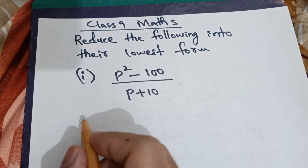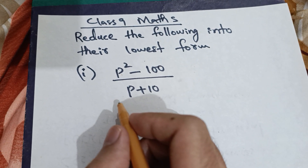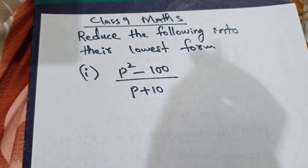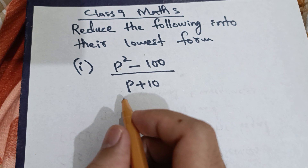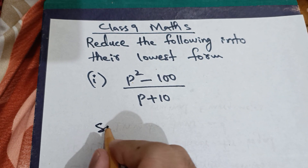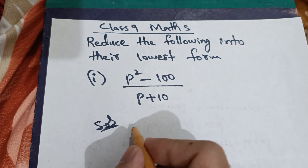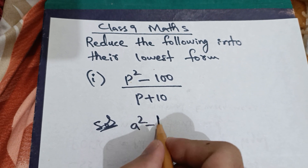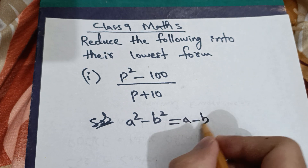Dear friends, class 9 mathematics — reduce the following into their lowest form. Number 1: p squared minus 100 divided by p plus 10. We will use the formula a squared minus b squared, which is equal to a minus b into a plus b.